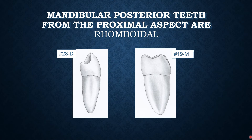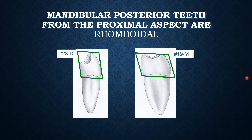Mandibular posterior teeth from the proximal aspect resemble a rhomboid. The mesial and distal aspects of mandibular posterior teeth — both premolars and molars — resemble a rhomboid. The reason is that the crowns of these mandibular posterior teeth are tilted lingually, and because of this lingual inclination of around 45 degrees with respect to the long axis of the tooth, they start resembling the geometric shape of a rhomboid.